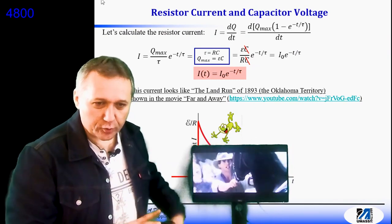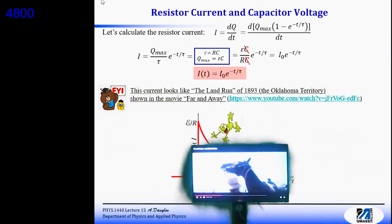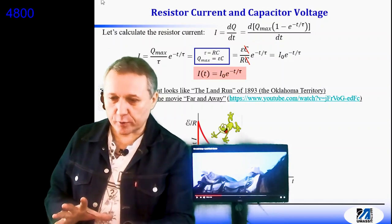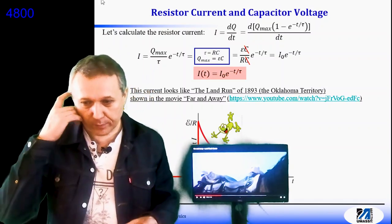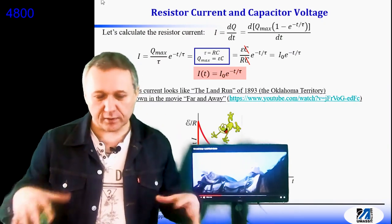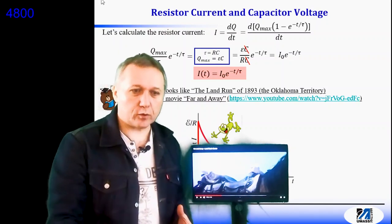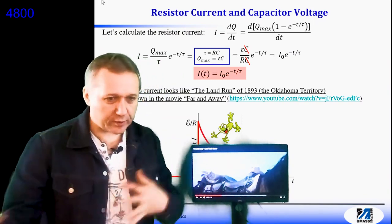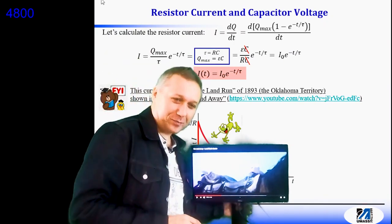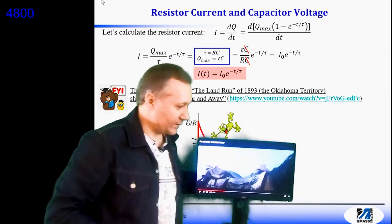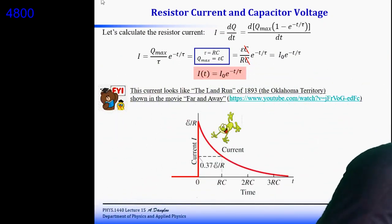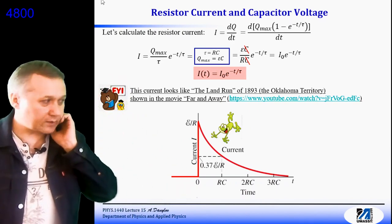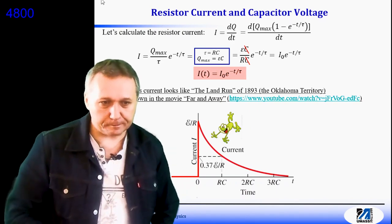At the initial moment of time when the switch is open, people are waiting for the sound of the gun. When the gun sounds, the race begins, and at that initial moment current is the largest. Then with time it decays. Because the land gets occupied, fewer and fewer people are attracted to the new land — chances of getting something new become next to zero.